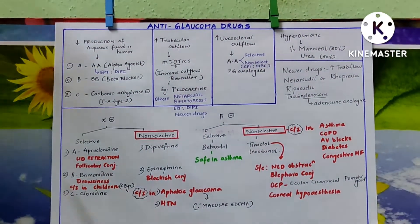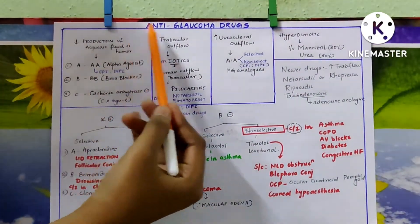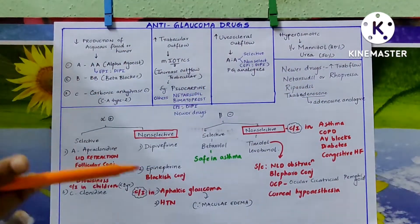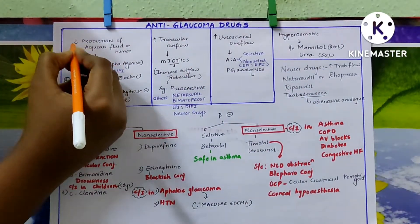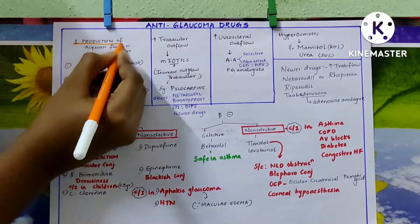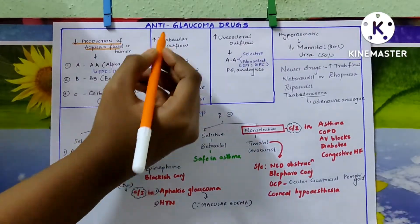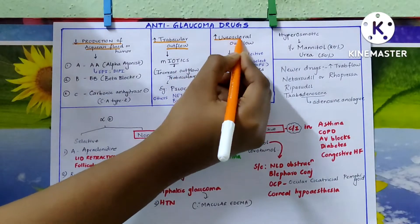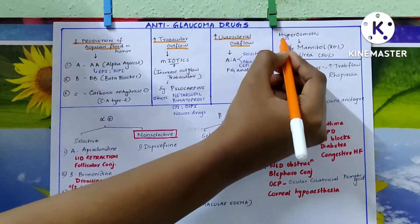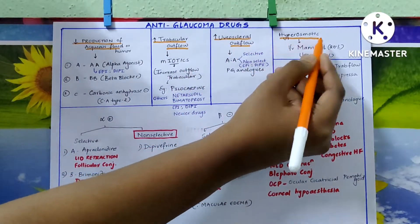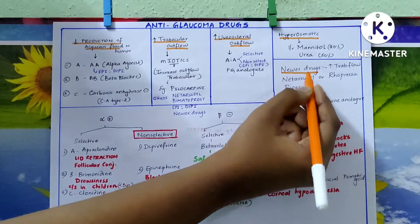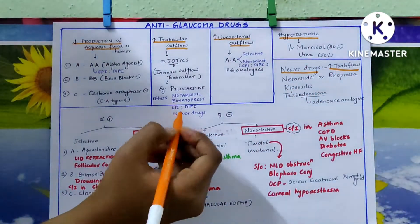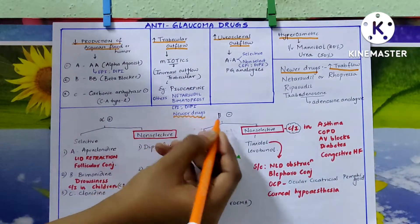Let us discuss anti-glaucoma drugs, which are divided into different classes based on mechanism of action. First is decreased production of aqueous humor. Second is increased outflow, which is of two types: trabecular outflow and uveosc leral outflow. Then hyperosmotic agents, and newer drugs — which also work by increased trabecular outflow — are included in that category.